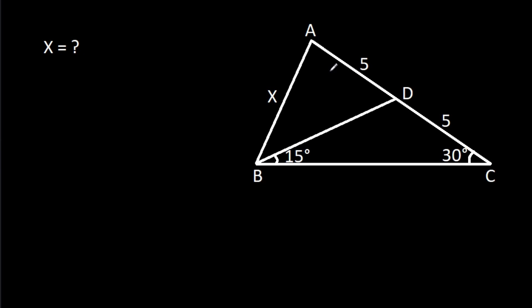In this video, we have been given that AD is 5, CD is 5, angle DBC is 15 degrees and angle DCB is 30 degrees, and AB is X. We have to find X.